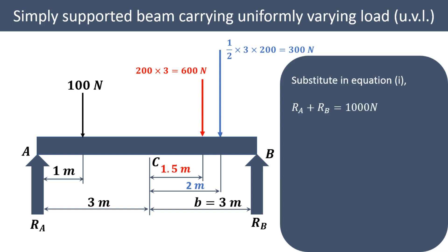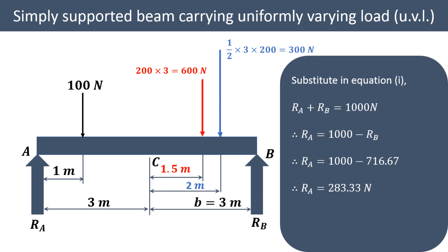Substituting into equation one: RA plus RB equals 1000, so RA equals 1000 minus 716.67, which gives RA equal to 283.33 Newton. In this way, we can find out the support reactions RA and RB for a simply supported beam carrying a point load, uniformly distributed load, and uniformly varying load. Thank you very much for watching.